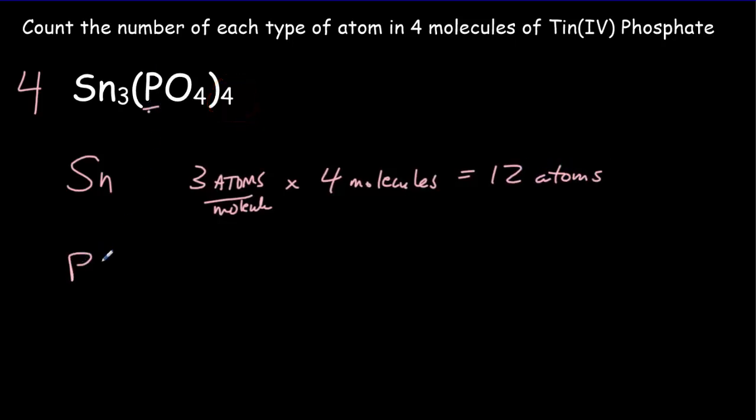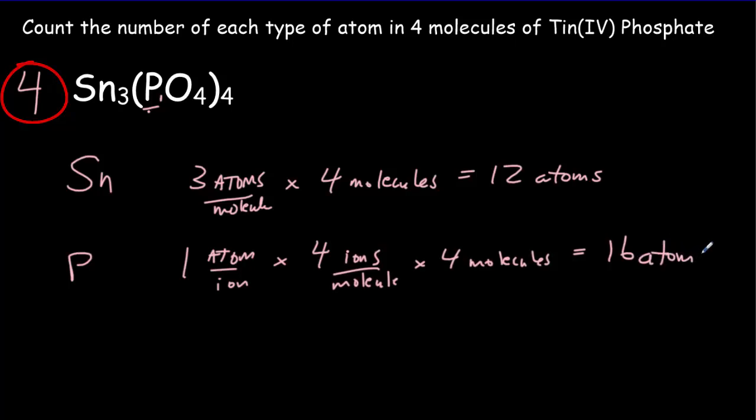For the phosphorus, we've got one atom per ion times four ions per molecule times four molecules. So you're going to end up with 16 atoms of phosphorus. And finally, the oxygen has four atoms per ion. And I'm going to stop writing these units here. So that's four atoms per ion times four ions per molecule times four molecules, giving me a grand total of 64 atoms.